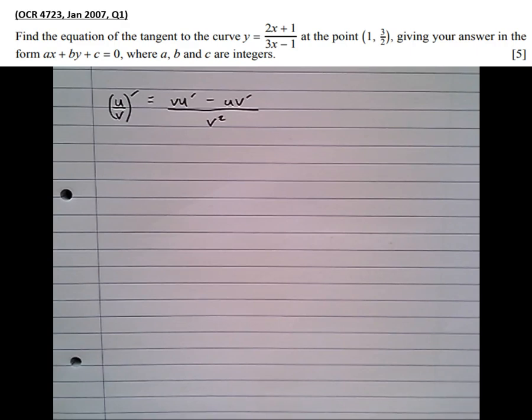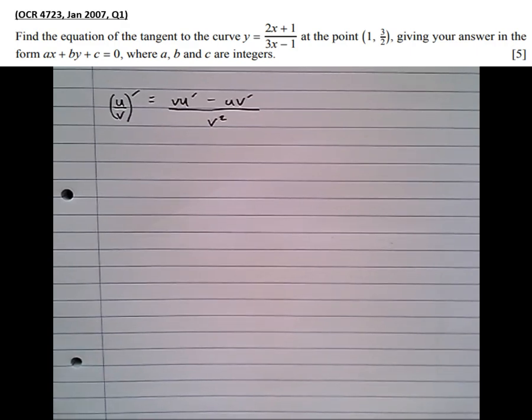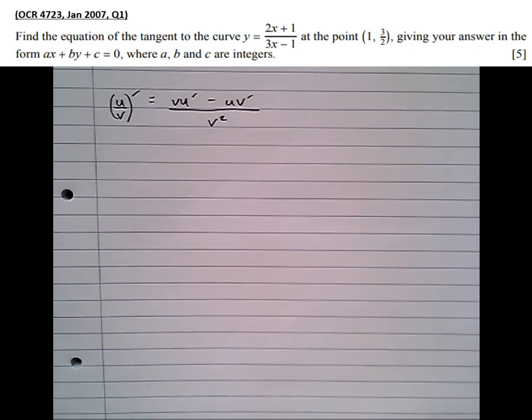So let's have a look at this question. Find the equation of the tangent to the curve y equals 2x plus 1 over 3x minus 1 at the point (1, 3/2), giving your answer in the form ax plus by plus c equals 0, where a, b, and c are integers.